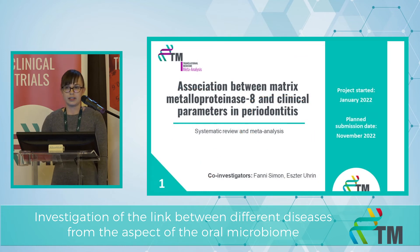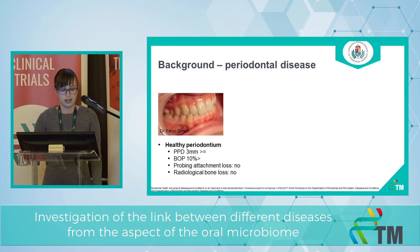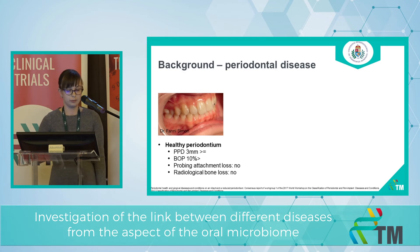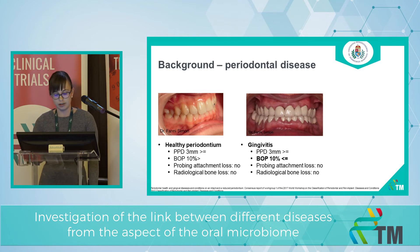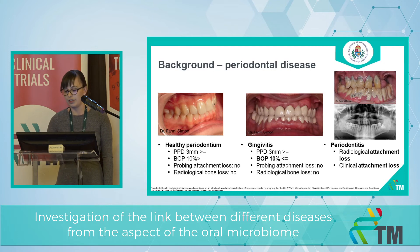The title of our second meta-analysis is the association between matrix metalloproteinase 8 (MMP8) and clinical parameters in periodontitis. Periodontal diseases are destructive processes involving the periodontium, which is the supporting apparatus of the teeth. Healthy periodontium parameters are shown on the table, while in gingivitis the main difference is bleeding on probing with no radiological or clinical attachment loss. However, in periodontitis, both radiological and clinical attachment loss are present.